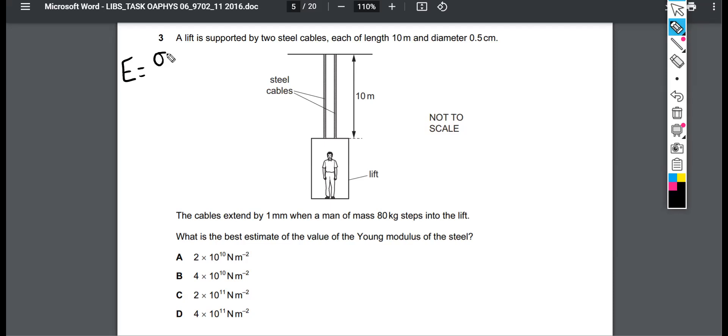So there's different ways to think about young modulus. The young modulus E is the stress over the strain. Remember that the stress is the force per area and the strain is the extension over the original length. To turn this into a single fraction, we sometimes just consider young modulus as the product force times original length divided by the area, the cross-sectional area times the extension. So this is a good way to memorize young modulus too.